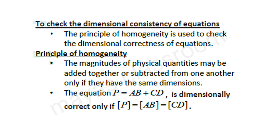The principle used to check consistency is the principle of homogeneity. For example, if P = AB + CD, then the dimension of P must equal the dimension of AB, which must also equal the dimension of CD. All terms in an equation must have the same dimensions.